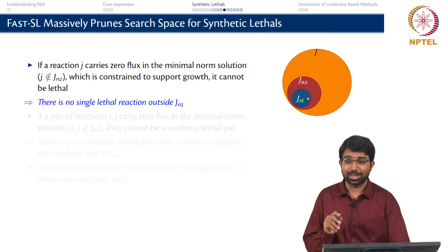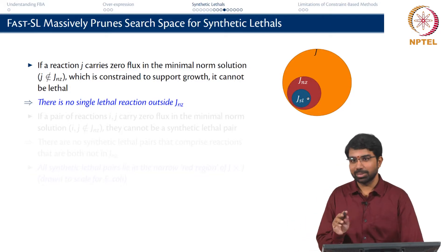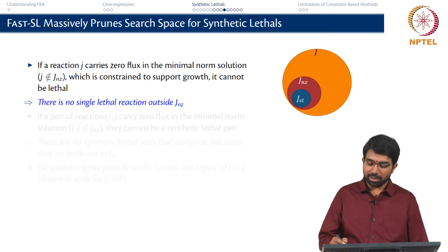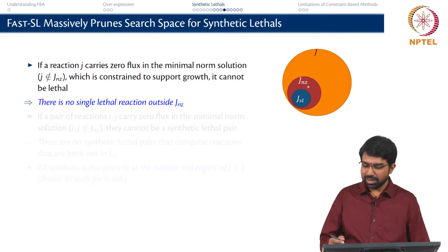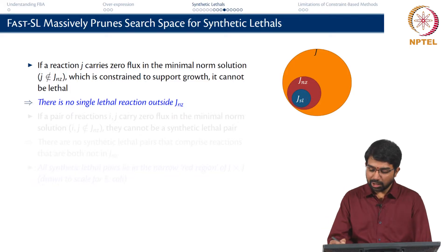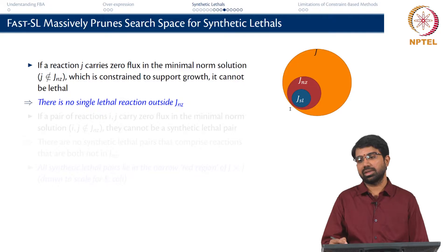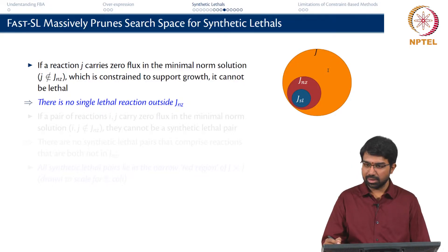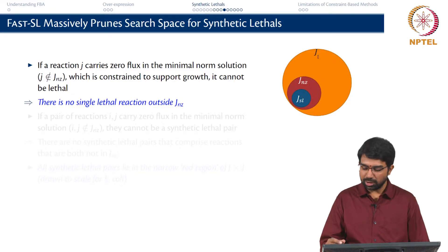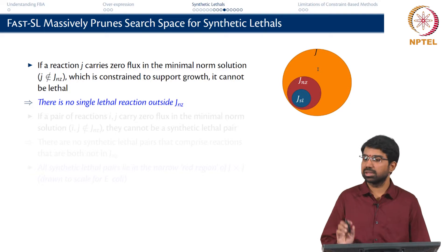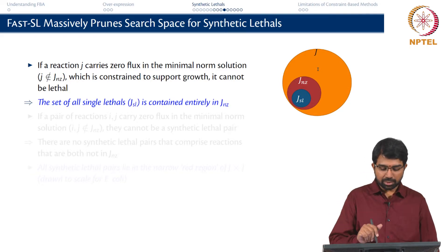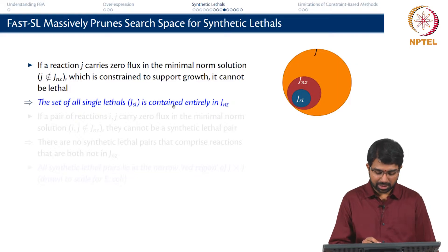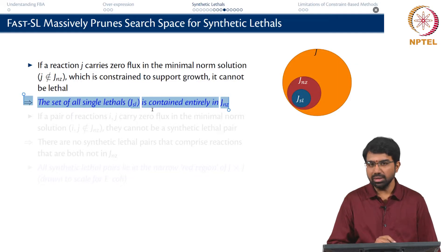There are many possible solutions to any FBA problem, but if a reaction does not carry a flux in any solution, it means it cannot be a lethal reaction because the cell is growing without that reaction. Therefore, all single lethal reactions belong in JNZ. This means you do not need to do size-J simulations — you just need to do size-JNZ simulations to find single lethals. So the set of all single lethal reactions is contained entirely in JNZ.